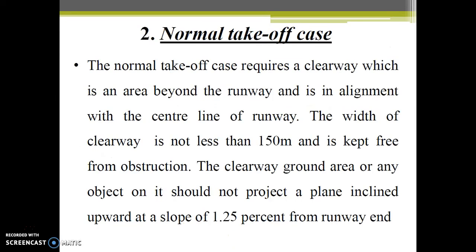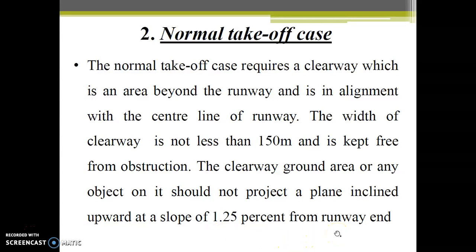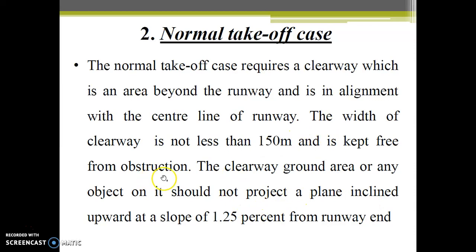The normal takeoff case requires a clearway, which is an area beyond the runway in alignment with the centerline of the runway. The width of the clearway is not less than 150 meters and is kept free from obstructions. The clearway ground area, or any object on it, should not project onto a plane inclined upward at a slope of 1.25% from the runway end. Clearway does not have to be paved — the runway itself is paved.